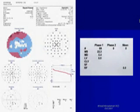Now we have an example. What can we conclude from this chart rapidly? The mean sensitivity is 22.3 decibels. The mean defect is 5.4, which means a generalized depression or mild generalized depression.